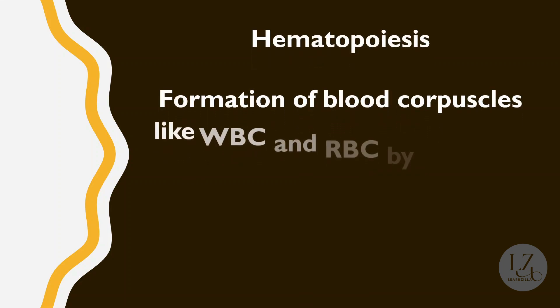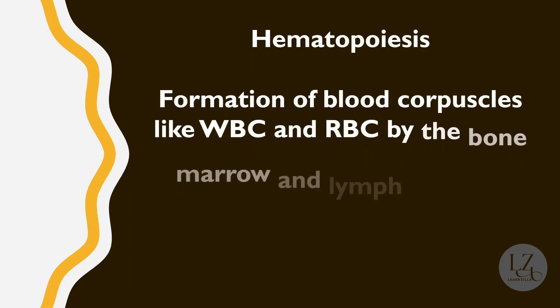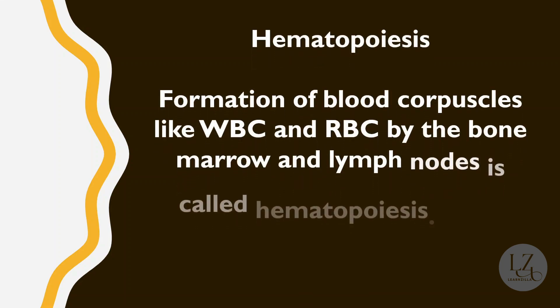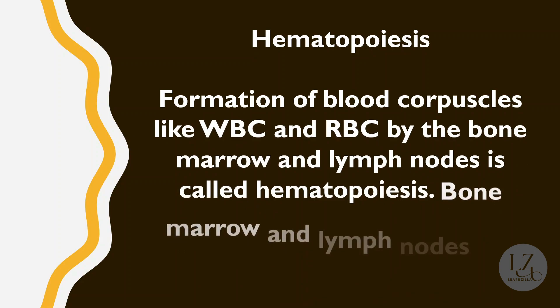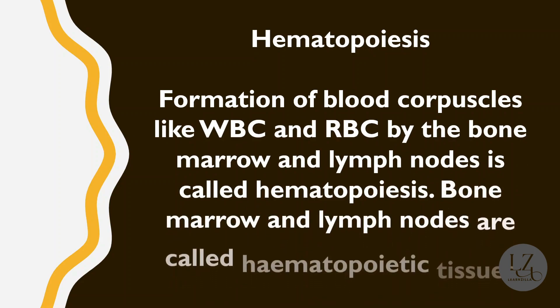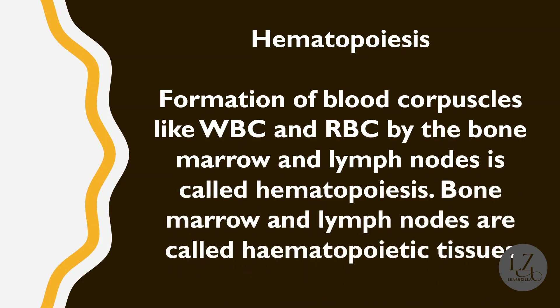Hematopoiesis is the formation of blood corpuscles like WBC and RBC by the bone marrow and lymph nodes. Bone marrow and lymph nodes are called hematopoietic tissues.